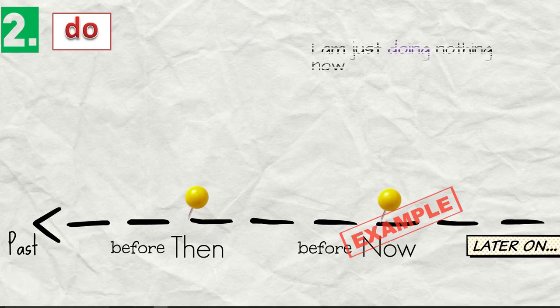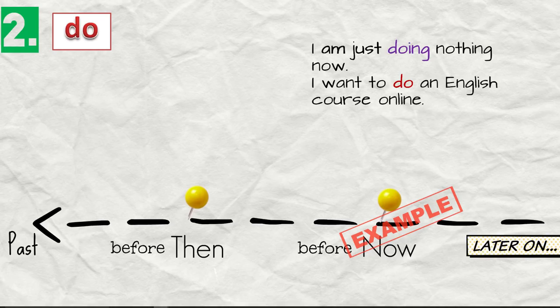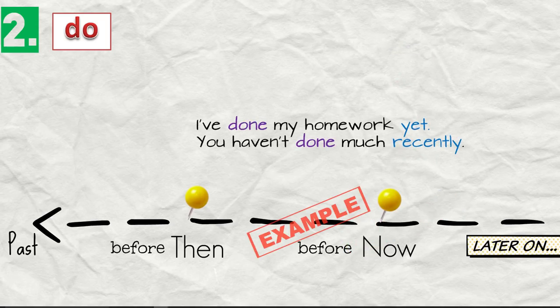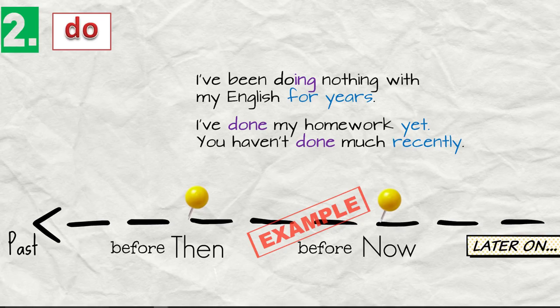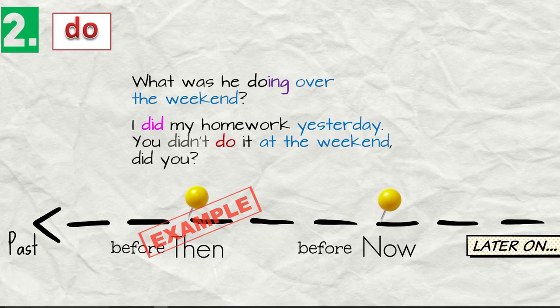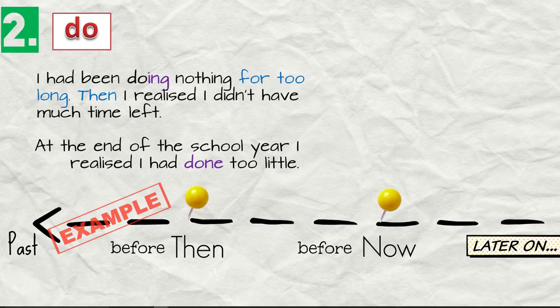Let's have examples. I am just doing nothing now. Which is not true, it's just an example. I want to do an English course online. You always do your English homework. He never does his homework. This is the present, now. Now we have examples. I've done my homework yet. You haven't done much recently. I've been doing nothing with my English for years. What was he doing over the weekend? I did my homework yesterday. You didn't do it at the weekend, did you? He did nothing last weekend. And before then, examples. At the end of the school year, I realized I had done too little. I had been doing nothing for too long. Then I realized I didn't have much time left.